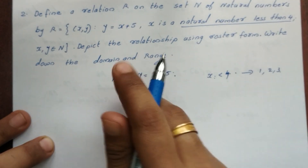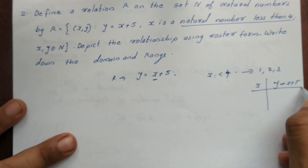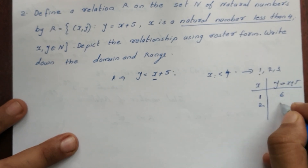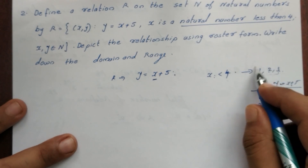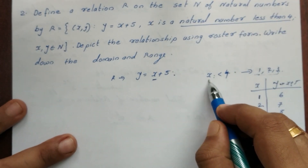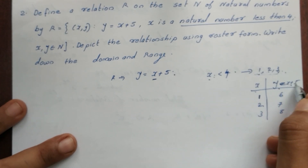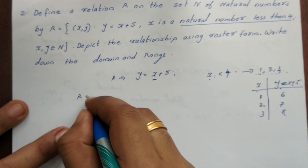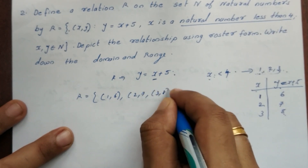To form this relation, x is a natural number less than 4, so x = {1, 2, 3}. Using y = x + 5: x = 1 gives y = 6; x = 2 gives y = 7; x = 3 gives y = 8. So the relation in roster form is {(1,6), (2,7), (3,8)}.